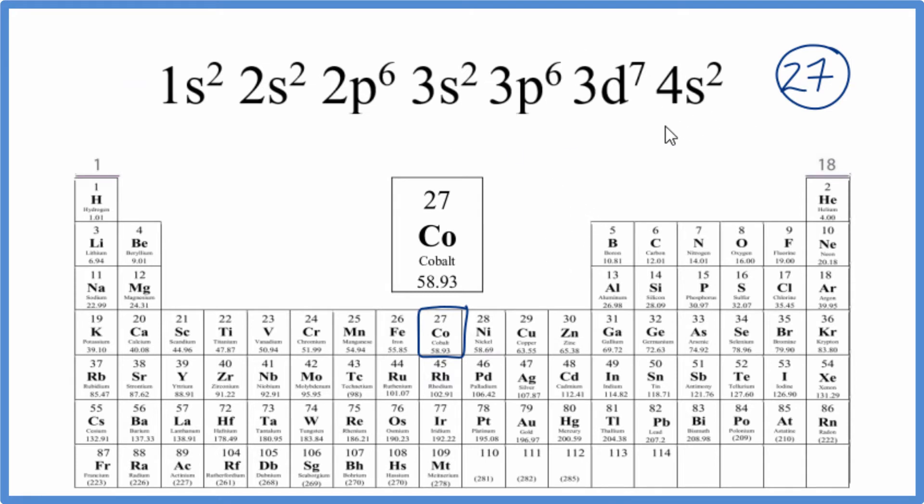This is the long form or full electron configuration. We can abbreviate this by finding the noble gas that comes before cobalt.